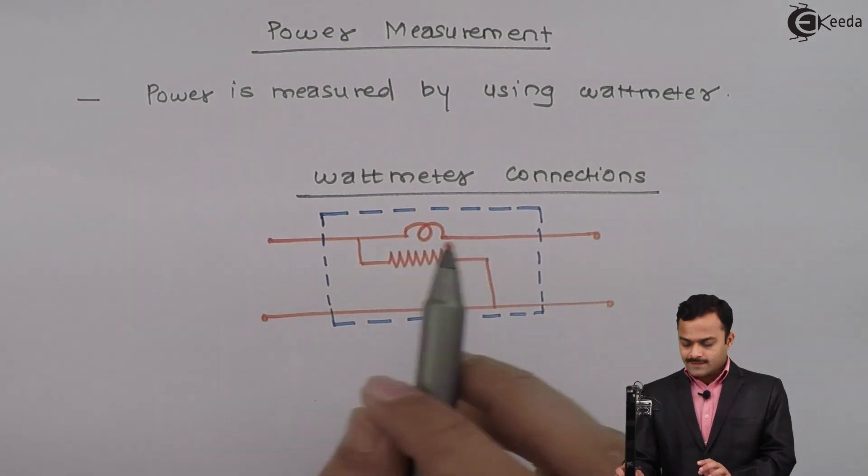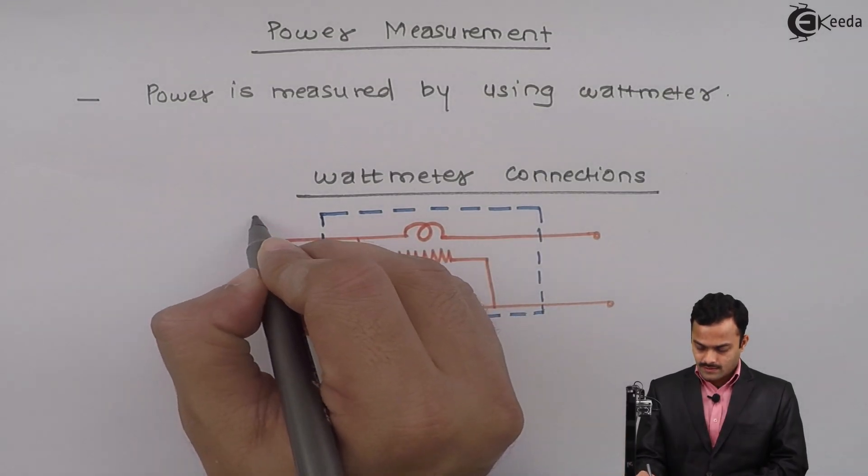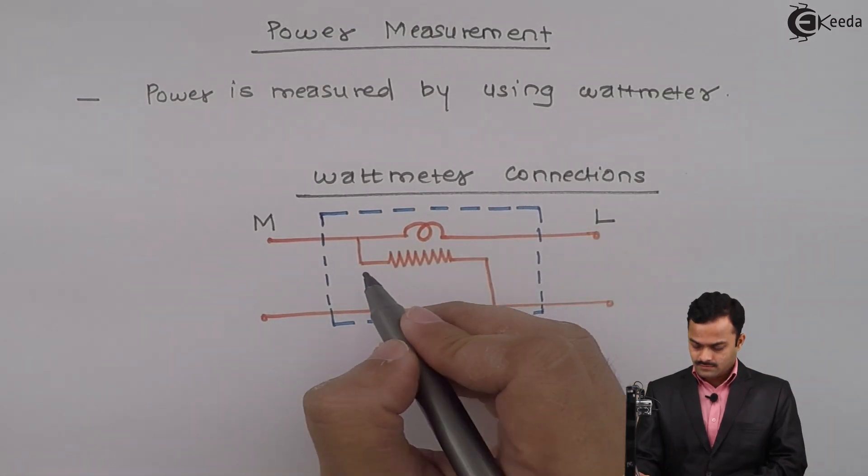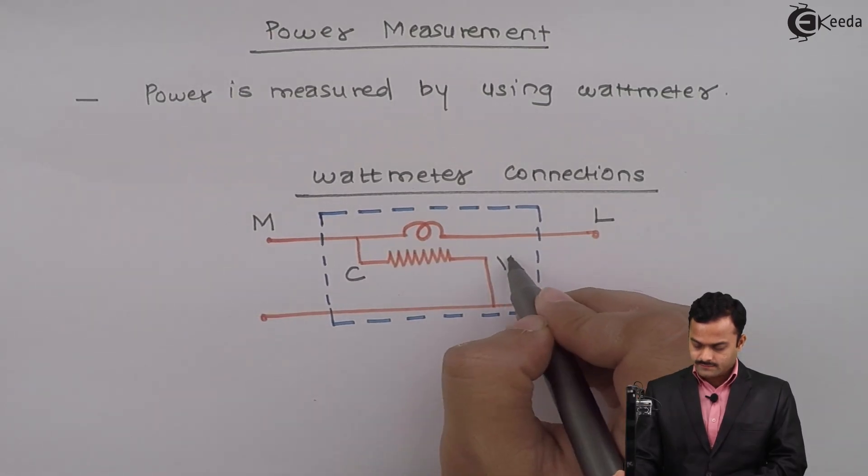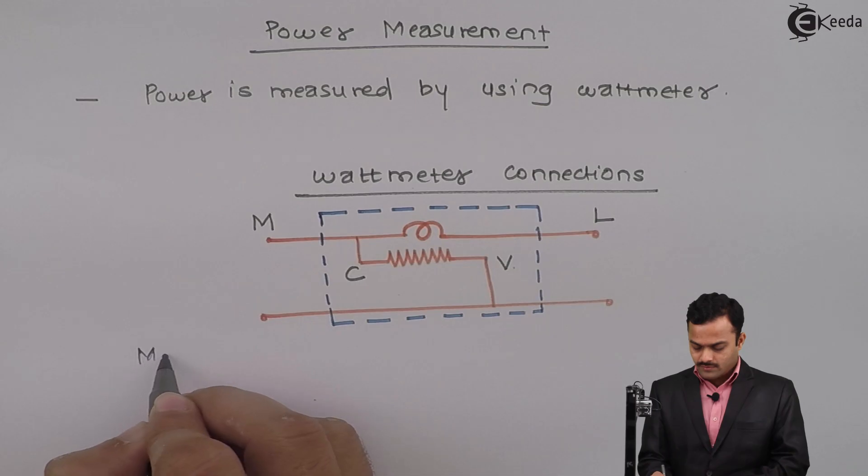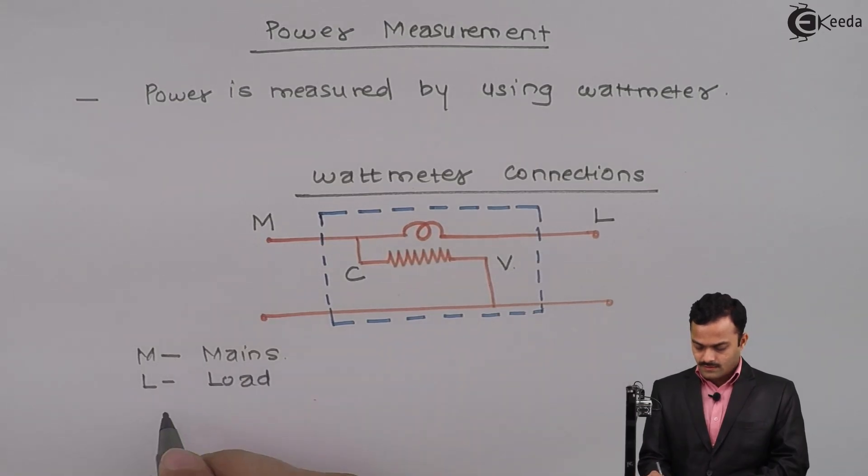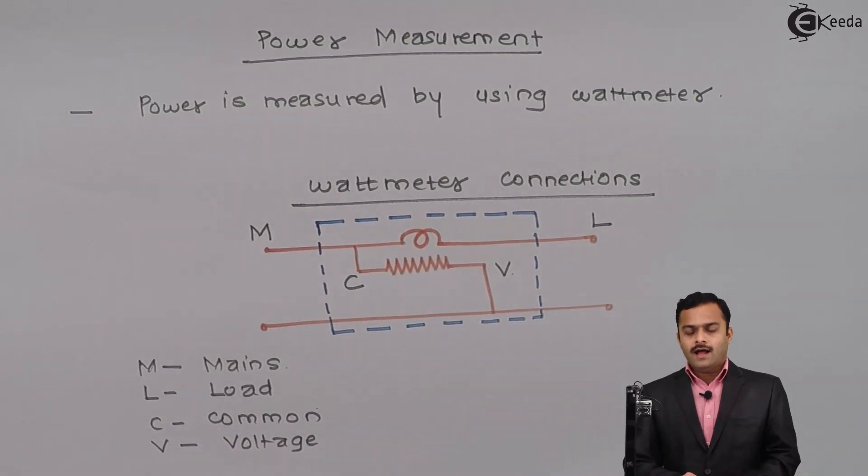Outside the box, this particular equipment has terminals M, L, C, and V. M stands for mains, L stands for load, C stands for common, and V stands for voltage. It has a current coil and voltage coil or pressure coil.